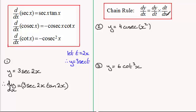Now we need to multiply it by dt by dx. So we differentiate what we nominated t to be. So we differentiate 2x then with respect to x and we get simply 2. So tidying this up just gives us 3 times 2 which is 6. And then we've got sec of 2x multiplied by tan of 2x.